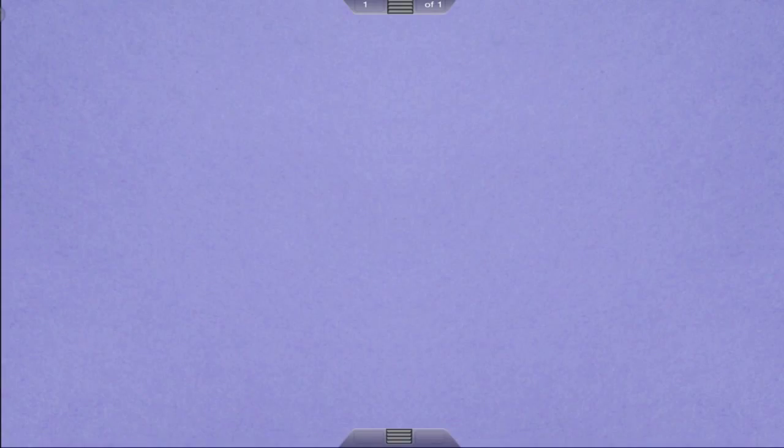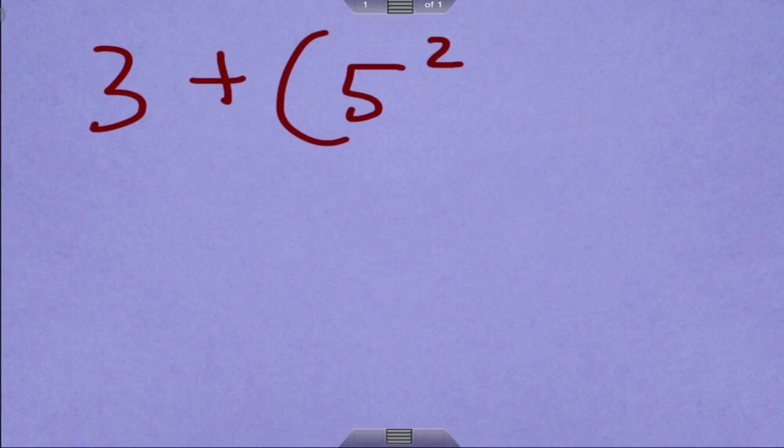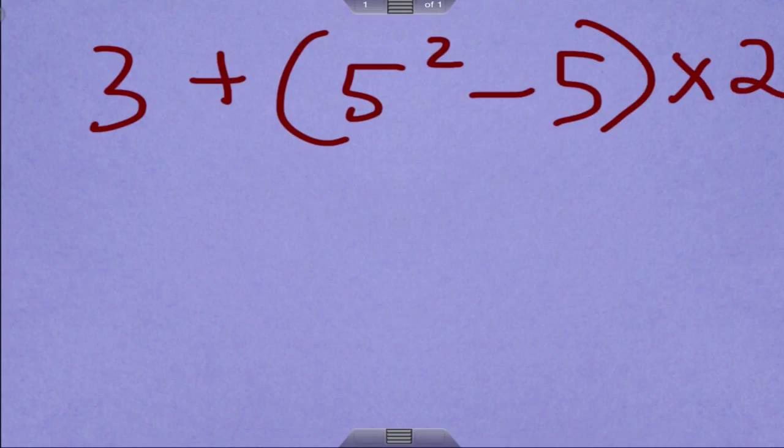Let's try parentheses. So if I have 3 plus 5 squared minus 5 times 2. Okay, so the first thing is to attack our parentheses. Here's our parentheses right here.